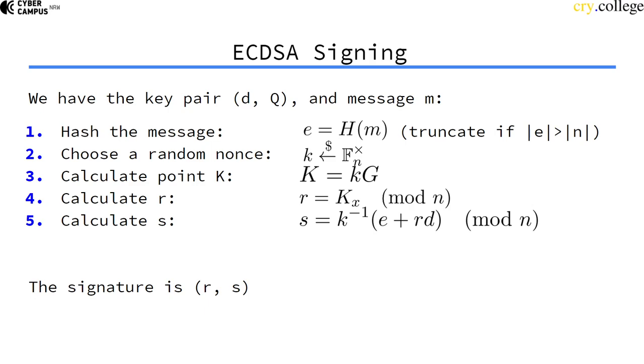Here I just want to mention that the signature consists of two values: R, which is the X value of a curve point, and S, which is a scalar value.